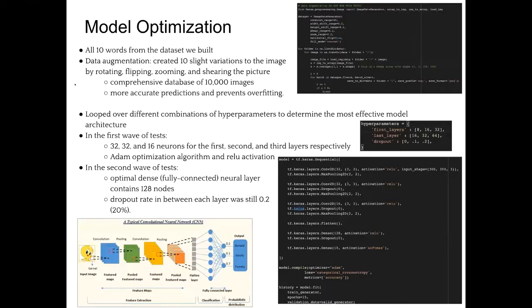So after we created our prototype model, we tried to optimize it. So first we add in all the 10 words from the dataset that we built, and then we did some data augmentation. And this means creating slight variations to each of our images. So we did this by rotating, flipping, zooming, and shearing each of the images. You can see that using the code in the top right. And so this took each of our 1,000 images, and through creating 10 slight variations to each of them, we were able to have a comprehensive dataset of about 10,000 images. And this made for more accurate predictions because now the model had more images that it could learn from and then generalize to. And that also helped with preventing overfitting.